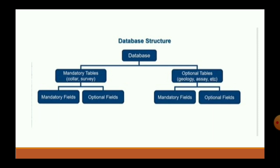Collar and survey are mandatory tables. Some fields within them are mandatory and some are optional. In the collar file, some fields are mandatory and some are optional; likewise in the survey file. Similarly, in geology and assay files, some fields are mandatory and some are optional. For creating a database, we must create collar and survey files, and between geology and assay we can choose one — typically the assay file.